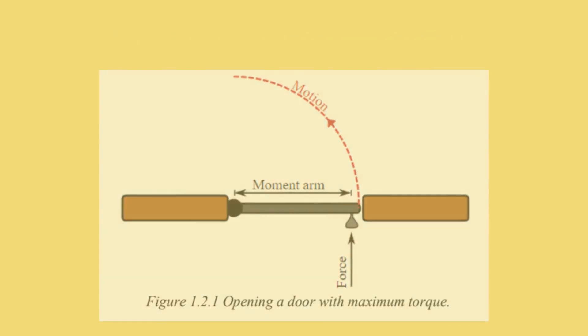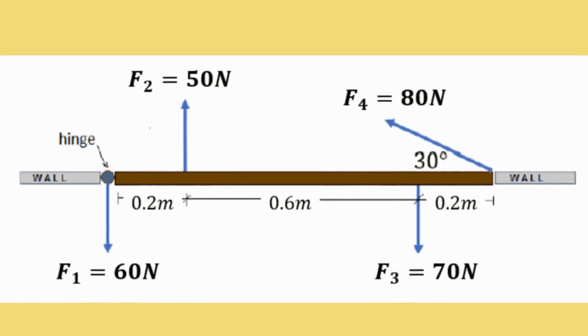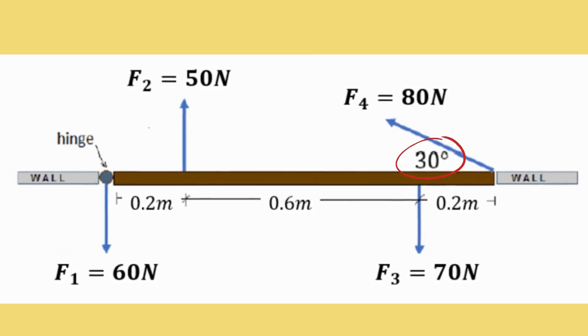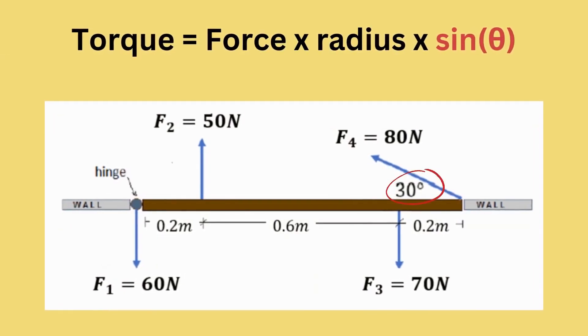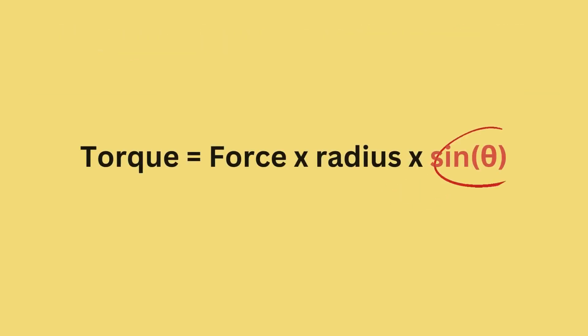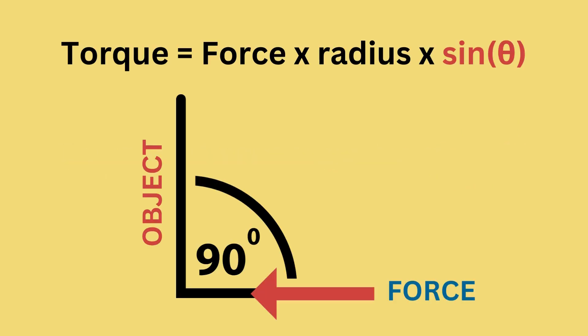But for this problem, notice that one of the forces has an angle. Upon seeing this, do not panic, because we can still solve the problem easily. For this angled force, we simply need to add sine theta to complete our equation. Sine theta is originally included in the equation because we need to consider the direction of the force applied on the object.